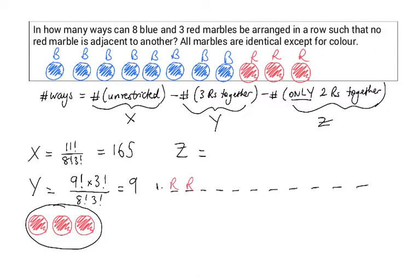Case 1. Imagine the 2 red marbles occupy the first 2 positions, in which case the 3rd position must be occupied by a blue marble. And this can be done in one different way. And so you have 8 objects left to organize, which can be done in 8 factorial.